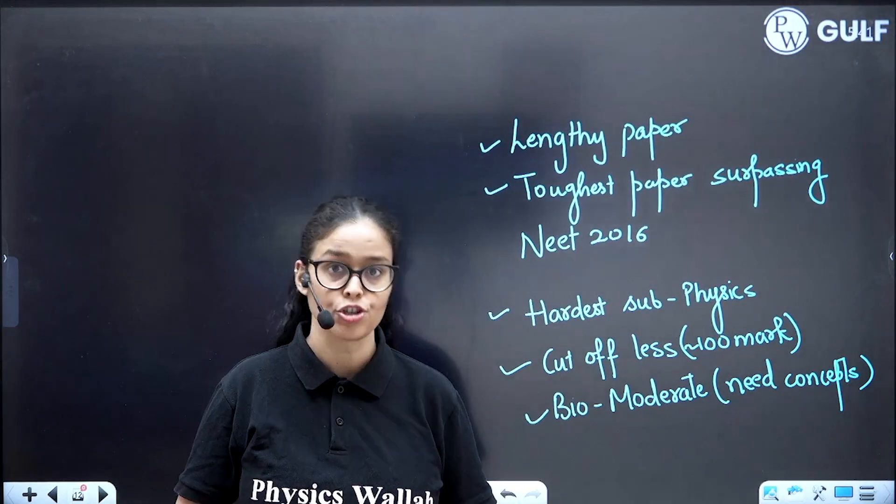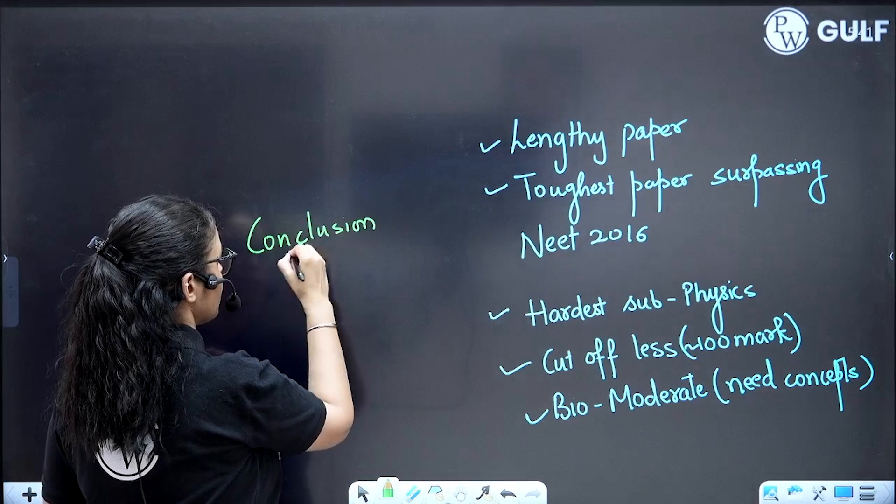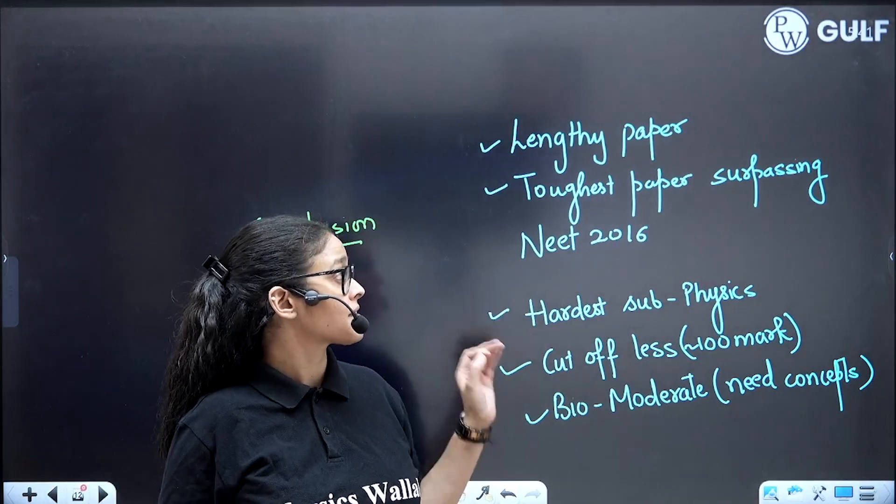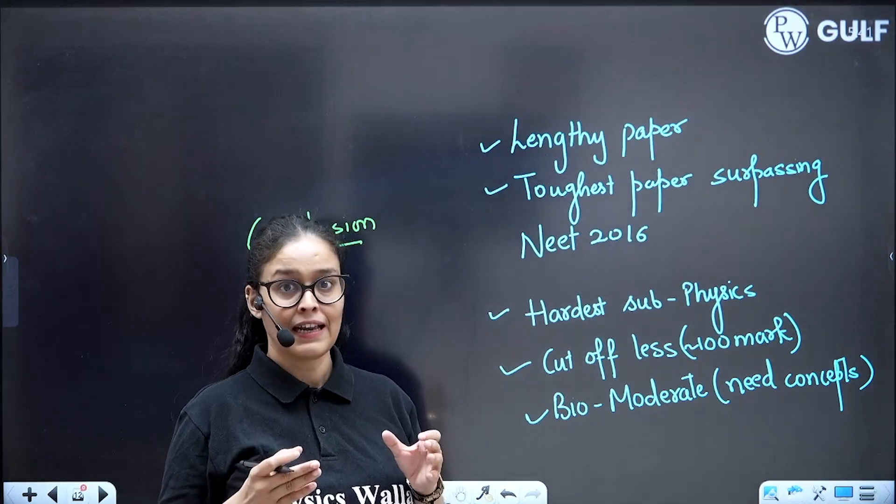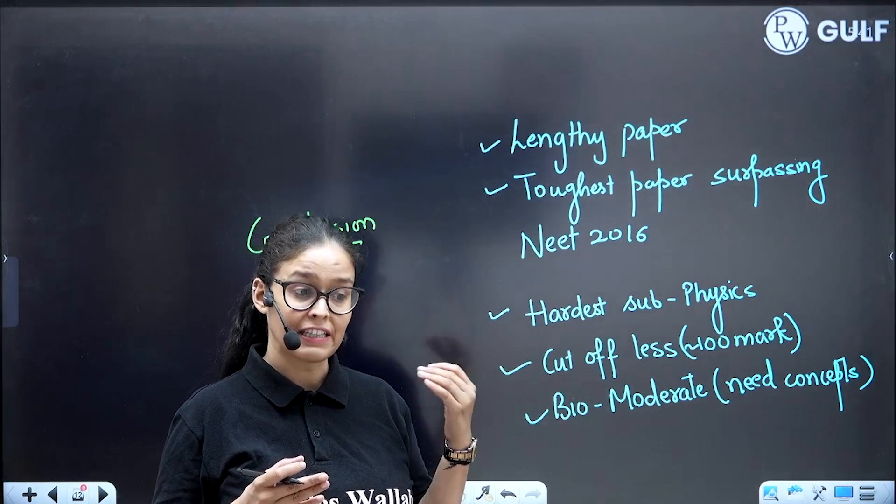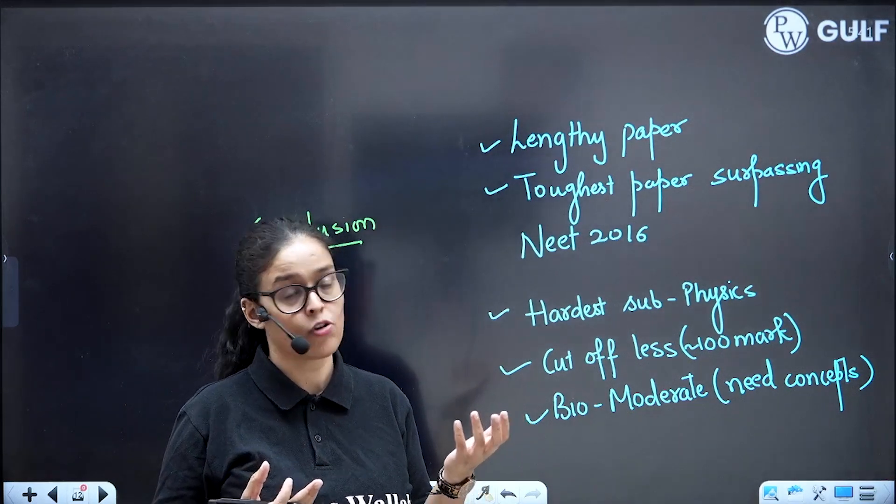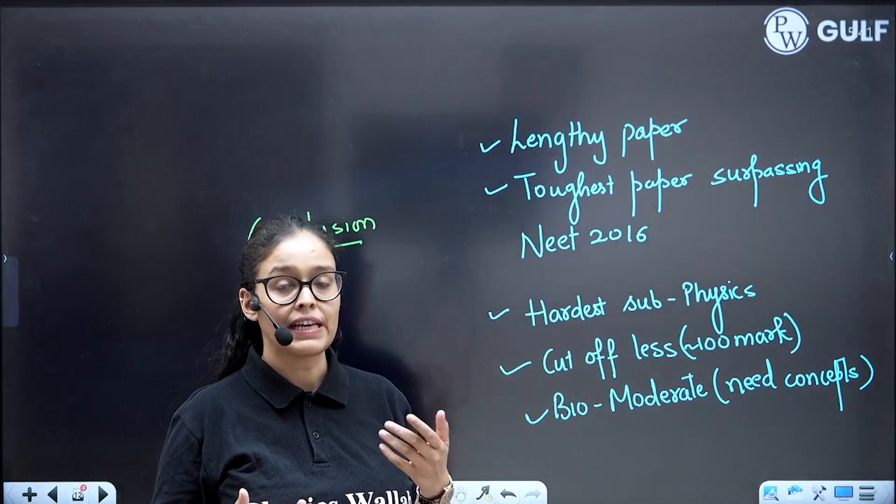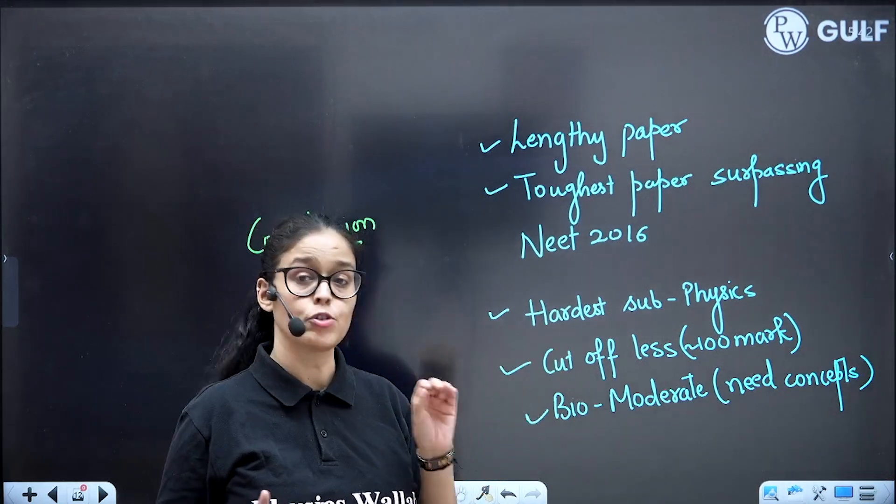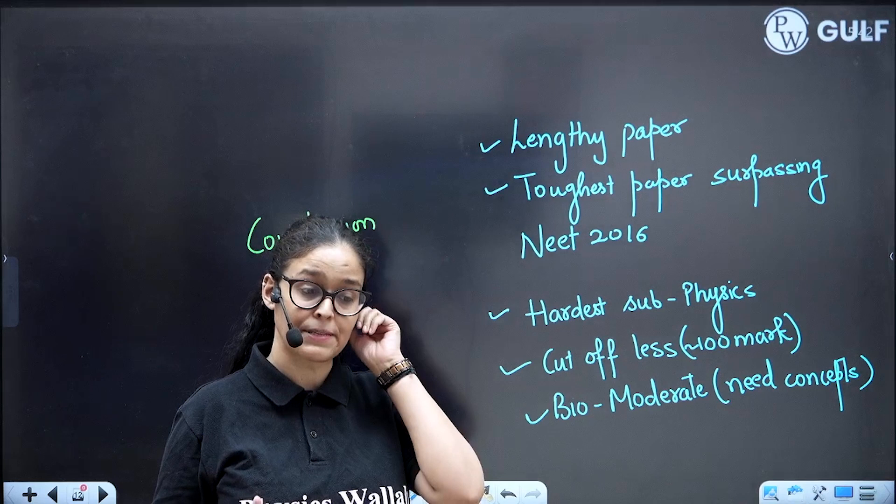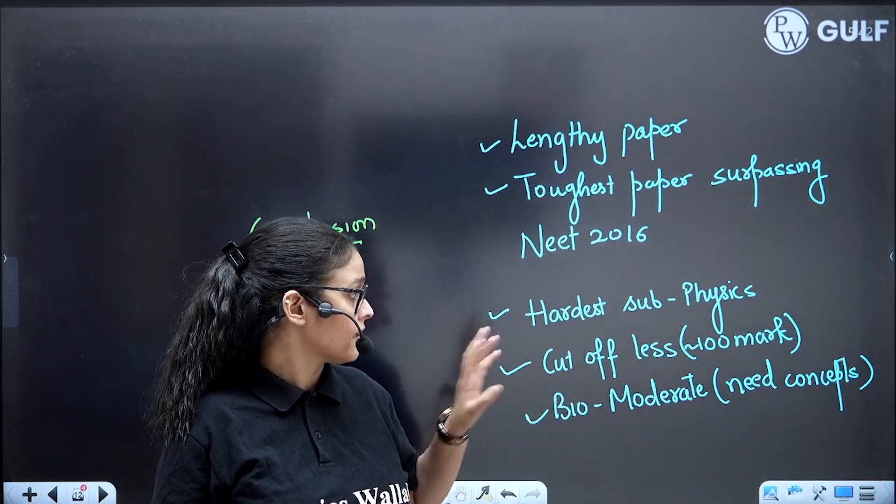What is the conclusion after analyzing the full paper? NEET paper was lengthy, toughest paper surpassing even NEET 2016. This paper is even, and physics was the toughest test in the past years. If we compare it with past years, it was the toughest paper and they will maintain this level because competition is increasing. They really want to filter out only serious students. Hardest subject was physics and cutoff will be less, even below 100. Bio was moderate level and needs concepts.